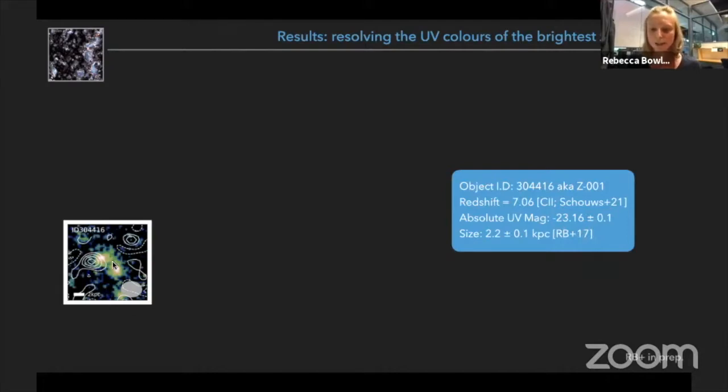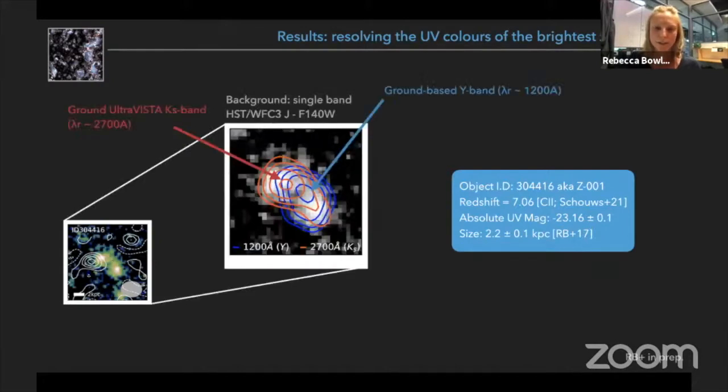So we only have single band Hubble data for this object, but when I was compiling the imaging for this object I noticed that in the UltraVISTA multi-band near-infrared data, there appears to be an offset between the different wavelengths. So of course I checked the astrometry and there's no relative astrometric problems between these two data, this appears to be a physical offset.